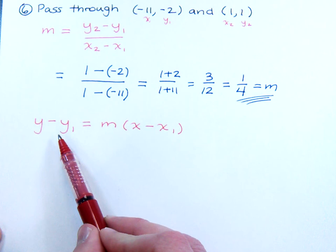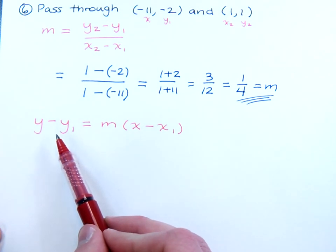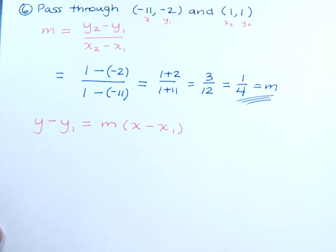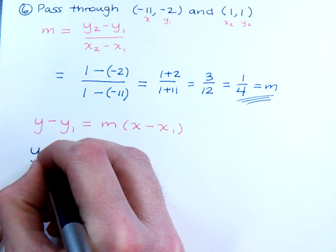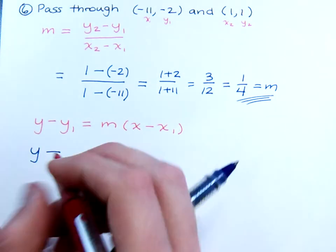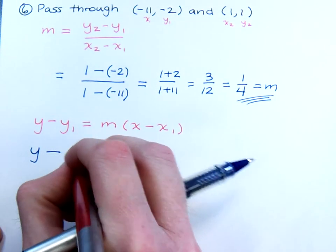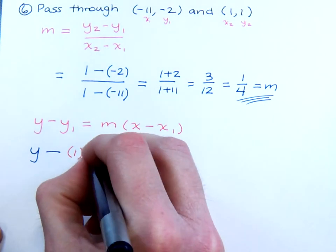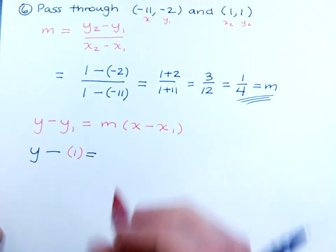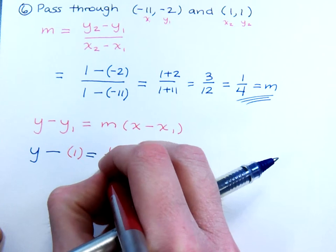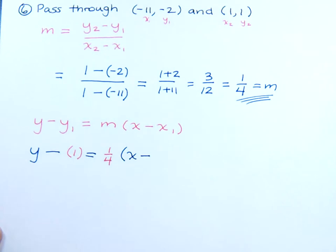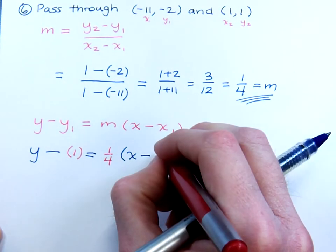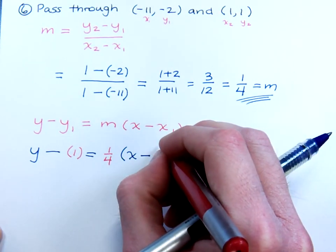Even though it says x₁ and y₁, it really just means the ordered pairs, or the coordinates for the point that you're working with. So let's use that. I have y minus, your y₁ is just going to be 1 equals, and then your slope is 1 fourth times x minus your x₁ is just going to be 1.